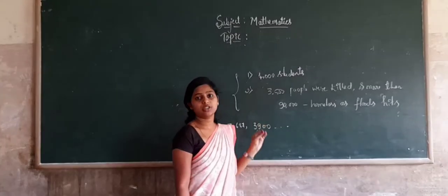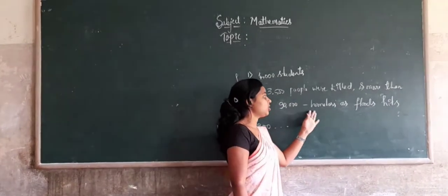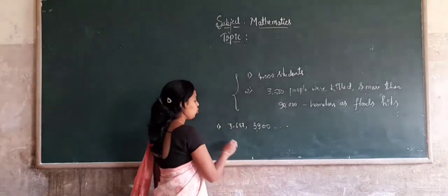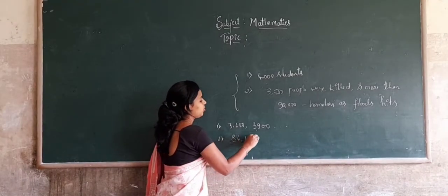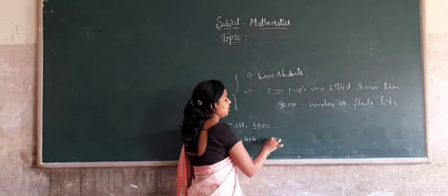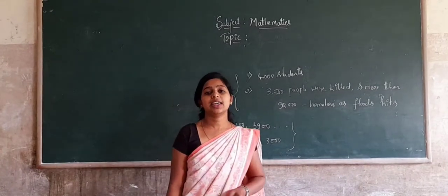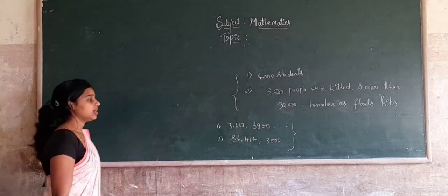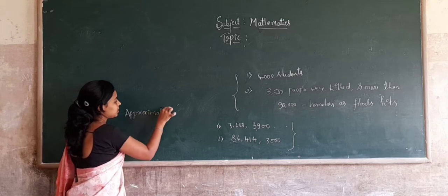Here it says 4000 students visited. In the second clipping, 3500 people were killed and more than 90,000 people have become homeless. The homeless people could be 86,440, and 3500 people were killed — also not exact numbers. It looks like exact numbers but they are not exact numbers. These numbers are called approximated numbers.